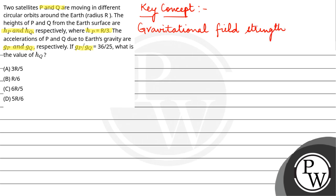That is g which is equal to GM upon R square, where R is the radius of earth and M is the mass of earth. Now you have a question given that GP means your acceleration due to gravity of satellite P, that is GP, and that will be equal to GM upon RP square.